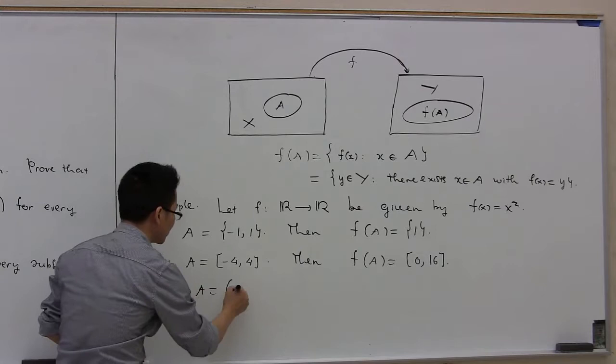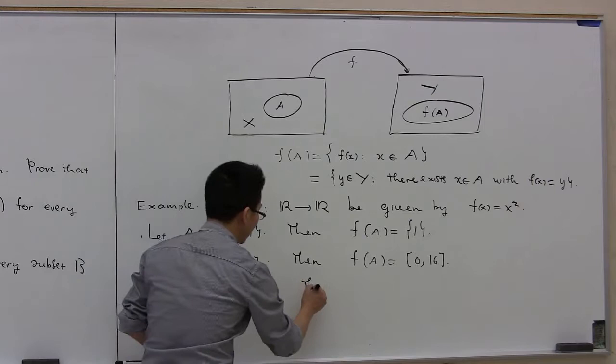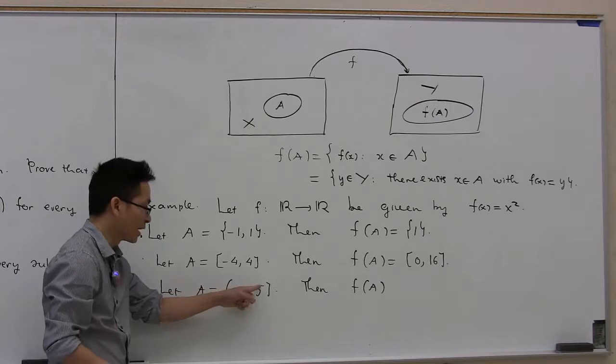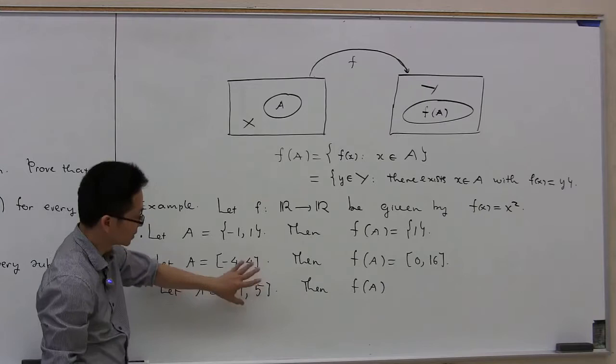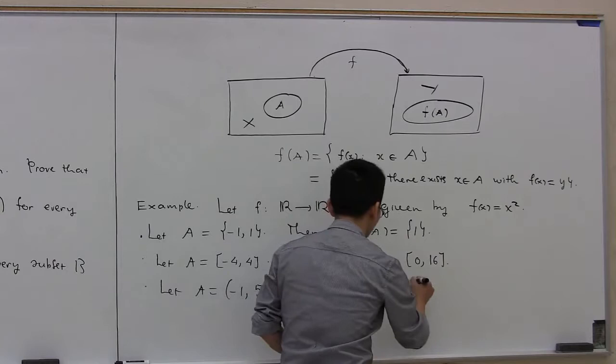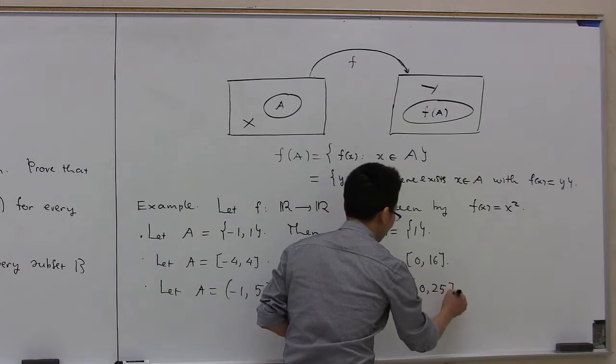Let A be the set [-1, 5]. Then f of A is computed as follows. If you square 5, you have 25. If you square -1, you have 1. However, 0 is also in this interval, and 0 to 1 is in this interval as well. Therefore, f of A in this situation is equal to the closed bounded interval from 0 to 25.